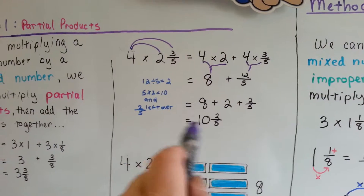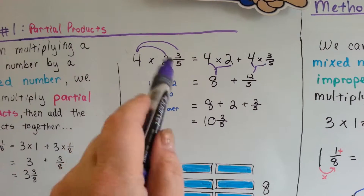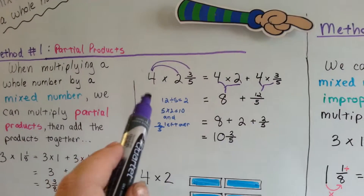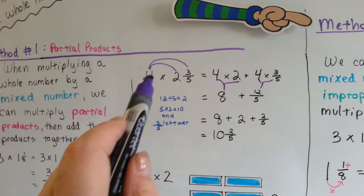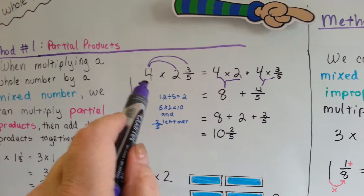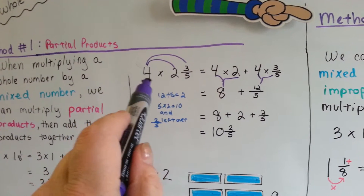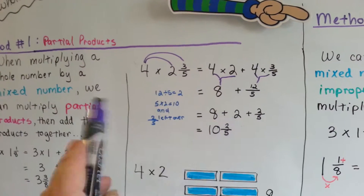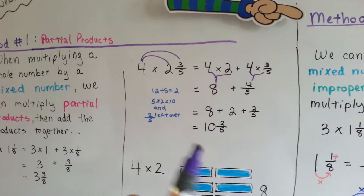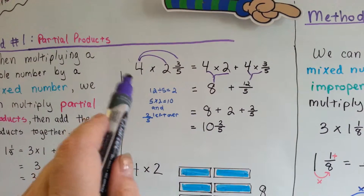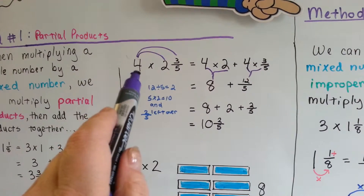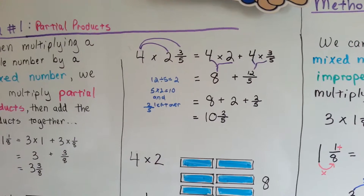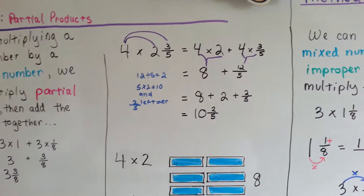With partial products, we break it up. Now, this only works when one factor is a whole number — not if both are mixed numbers. If it were 4 and 1 third times 2 and 3 fifths, that's covered in the next video. This video is just about a whole number times a mixed number.